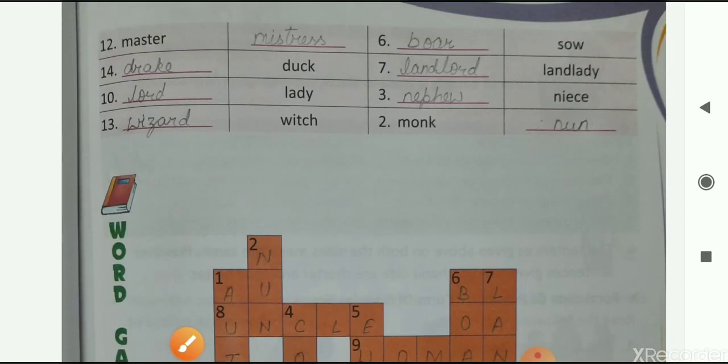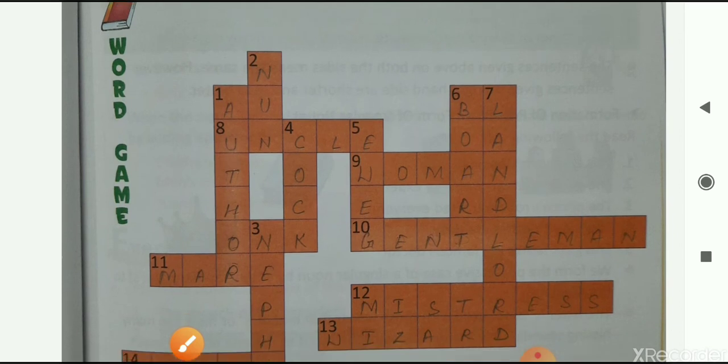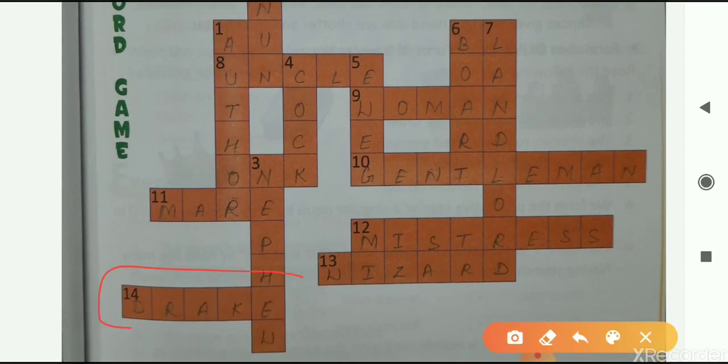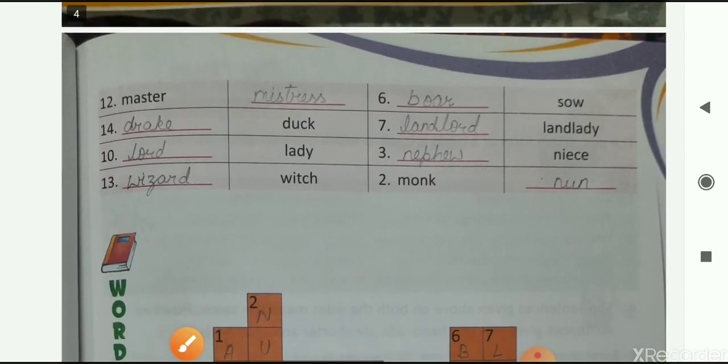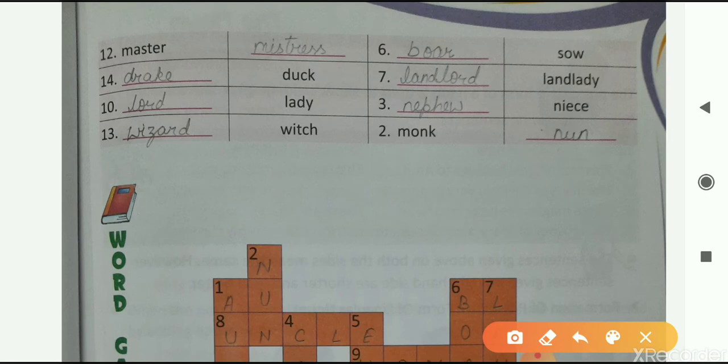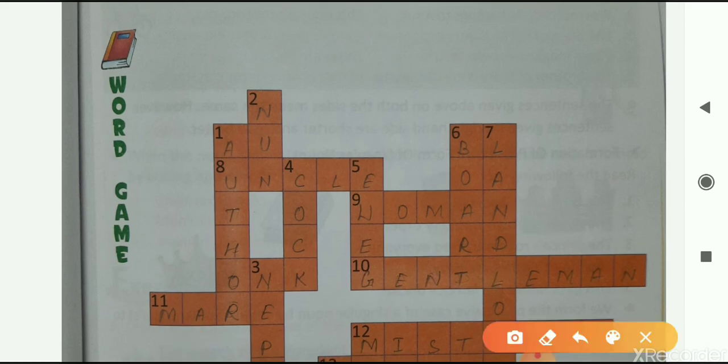Next is drake. Masculine of duck on number 14. Write drake, D-R-A-K-E. This one here. Next one is lady. So masculine of lady is lord and also gentleman, G-E-N-T-L-E-M-A-N. You can write any masculine form of lady. You can either write lord or gentleman. But here you have to fill gentleman. As you can see number of blanks given here is more. So write here gentleman.